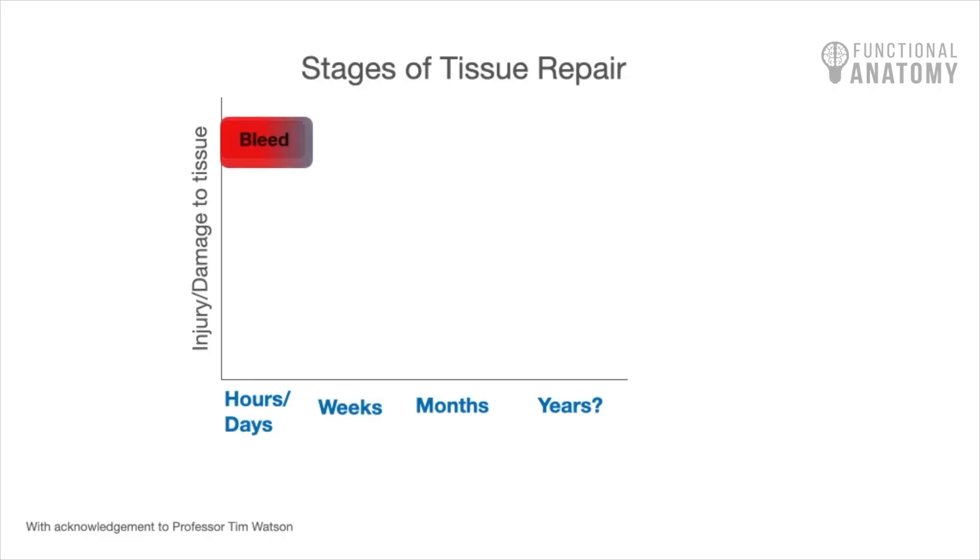The first thing that happens in any injury, whether it's a muscle sprain or strain, is that there is going to be some bleeding into that area. We can understand that from a cut, scratch, or graze, and also from inside — a muscle tear will become inflamed, go red, and swell up. That's all part of the process. So the first stage of wound repair is the bleed stage.